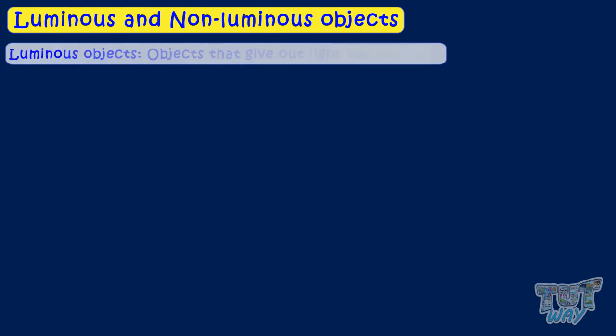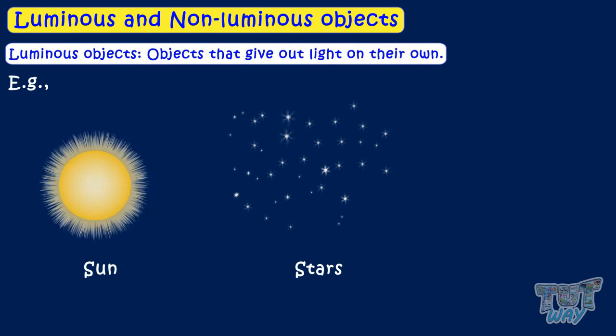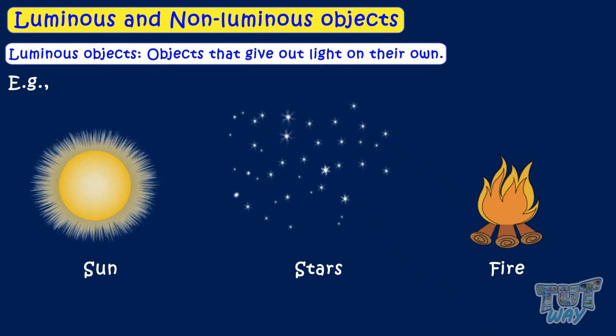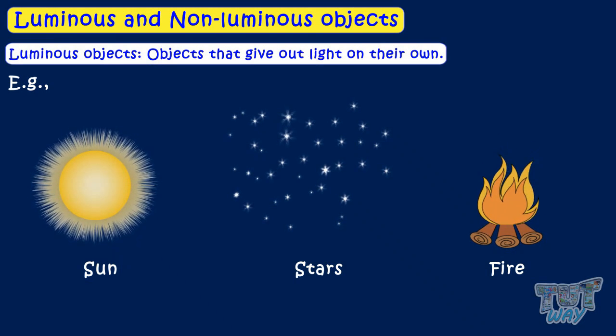Now let's see what are luminous and non-luminous objects. Objects that give out light on their own are known as luminous objects. Let's see some examples. Sun, stars, fire glow, and give out light on their own. So they are luminous objects.